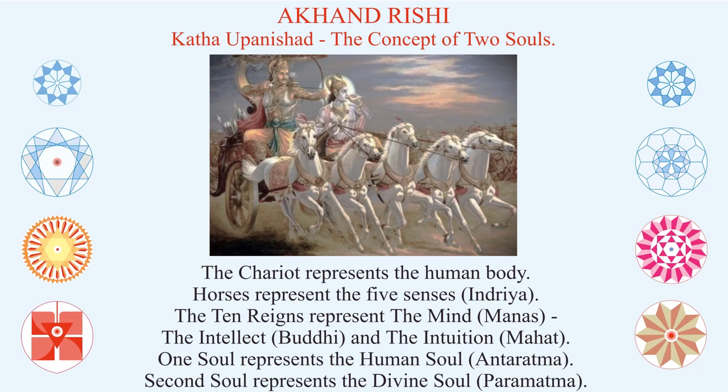Akhand Rishi — this picture I have shown earlier, and it is also part of Katha Upanishad as well as Gita Upadesha. Katha Upanishad and Gita Upadesha talk of the two souls within the body. This description from Katha Upanishad says the chariot represents the human body, or Jeevatma — the physical structure of matter as we know it.